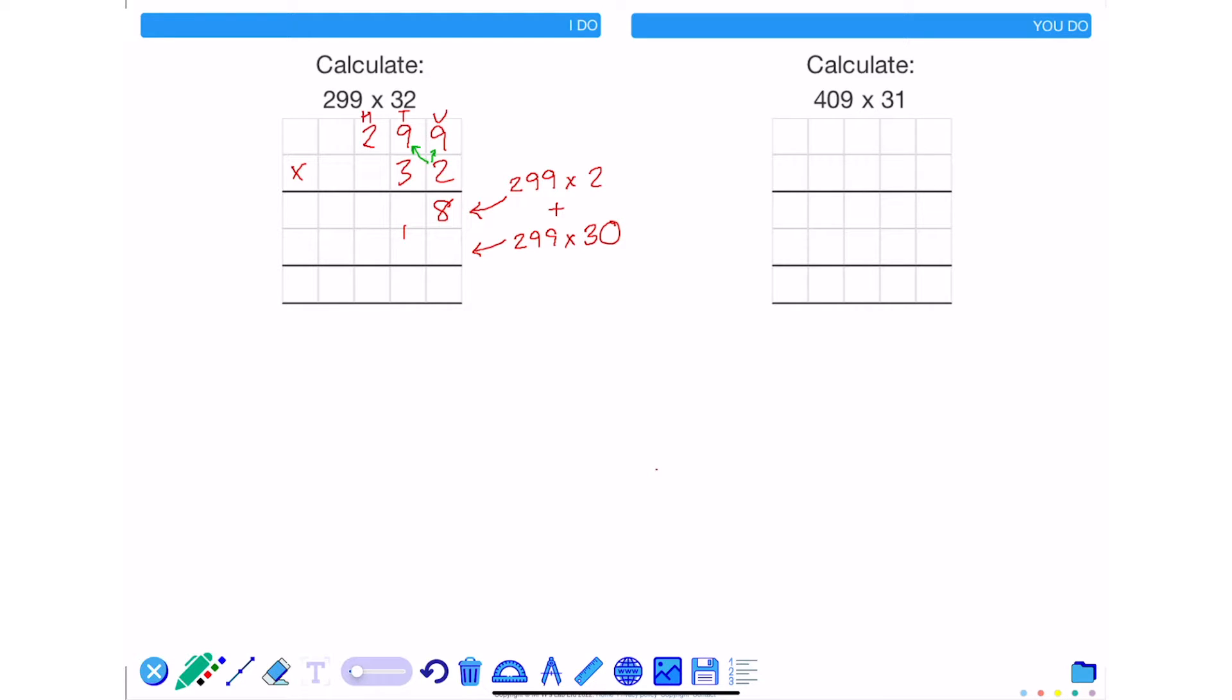2 times by 9 again is 18. Then add on the 1 makes 19. So put the 9 and carry the 1.